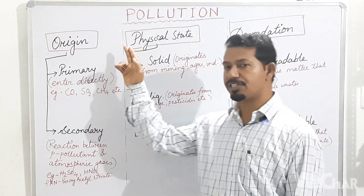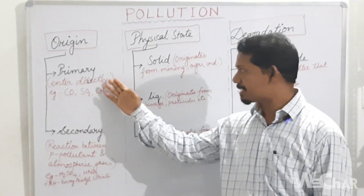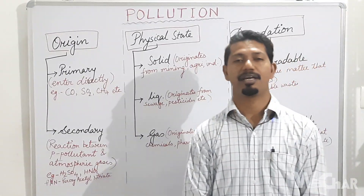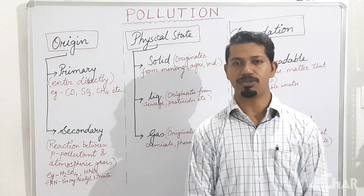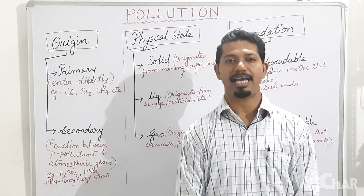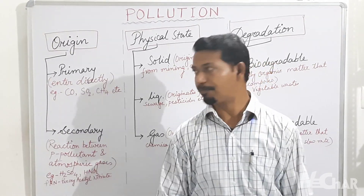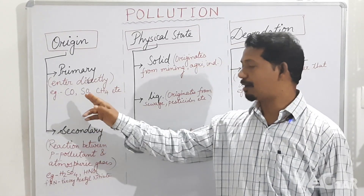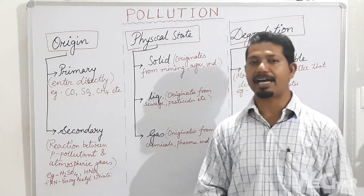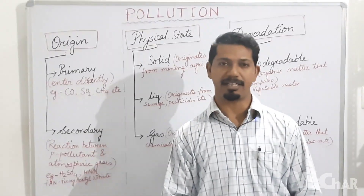On the basis of origin, pollutants are classified as primary and secondary. Primary pollutants are those that are directly added to the environment. For example, carbon monoxide, sulphur dioxide, and hydrocarbons like methane and benzene.